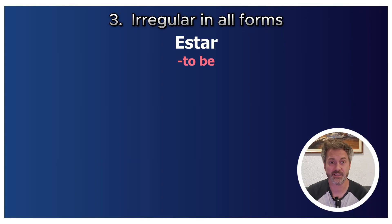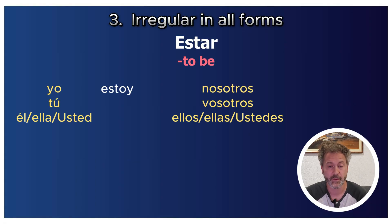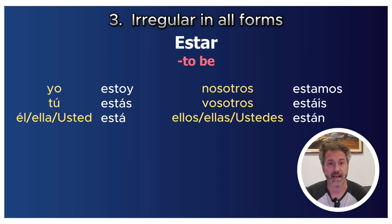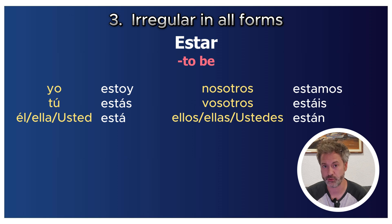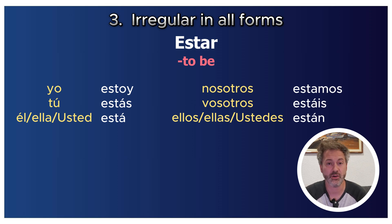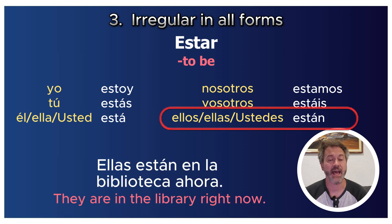Estar follows a similar pattern: yo estoy, tú estás, él/ella/usted está, nosotros estamos, vosotros estáis, ellos/ellas/ustedes están. For example: 'Ellas están en la biblioteca ahora' — They are in the library right now.